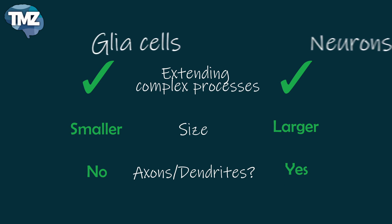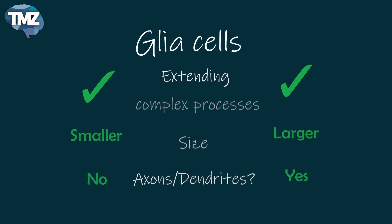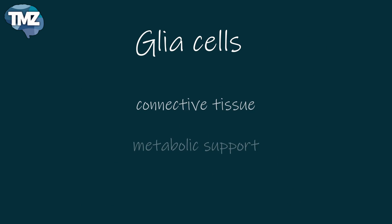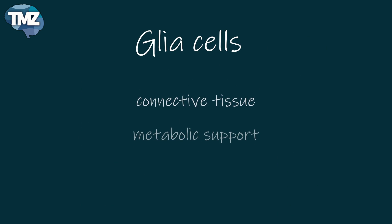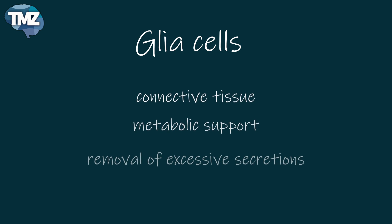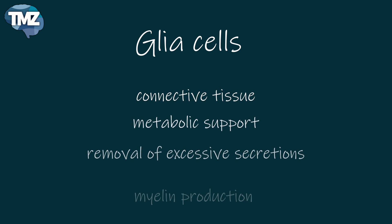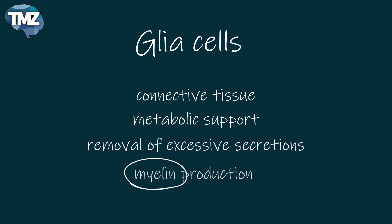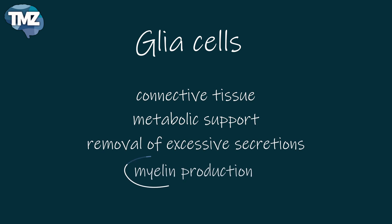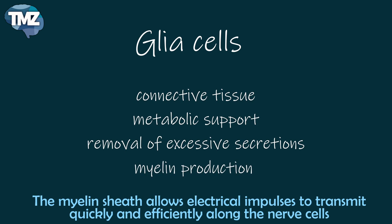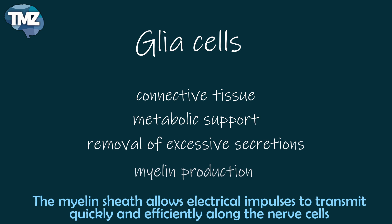Glial cells form connective tissue and the structure of the brain. They serve metabolic support roles for neurons, they remove excessive neuronal secretions, and they produce myelin, which insulates axons and aids in the electrical propagation of the signal along the axon.